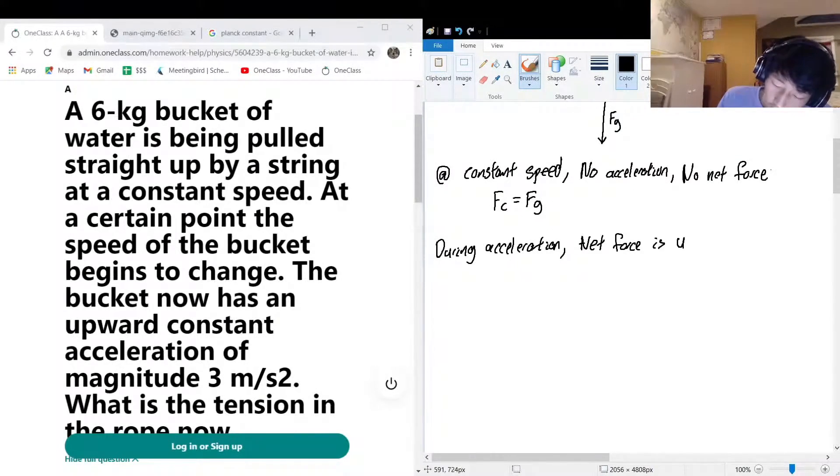This is up, and the net force—let's call that F_net—F_net divided by mass is equal to the acceleration up, a_up.